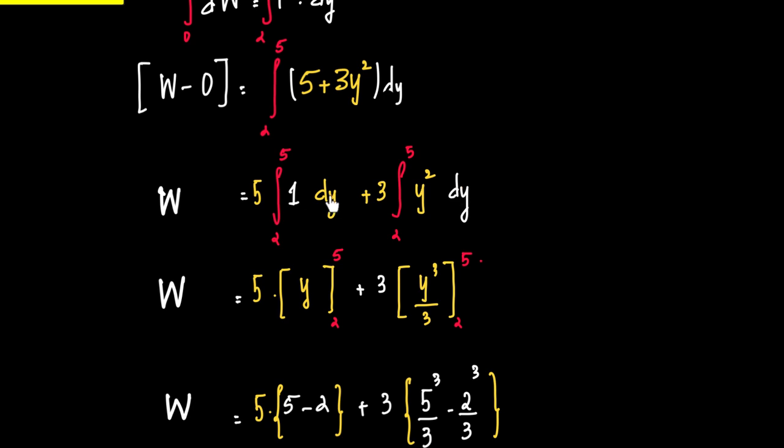What is integral dy? It is y. So we have y varying from 2 to 5 plus 3 dy into, what is integral y squared? It is y cubed by 3. Let me just write down that as well.